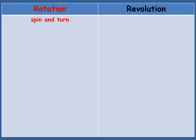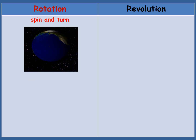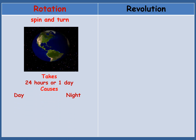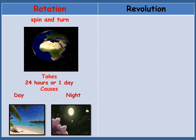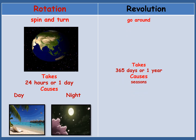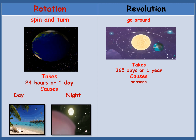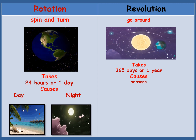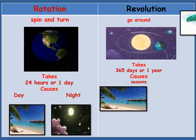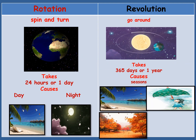Okay children, let us see what is the difference between rotation and revolution. In rotation, the earth spins and turns on its own axis. It takes 24 hours, or one day, for the earth to do one rotation — it causes day and night. In revolution, the earth goes around the sun. It takes 365 days or one year for the earth to do one revolution. It causes seasons like summer, spring, autumn, and winter.